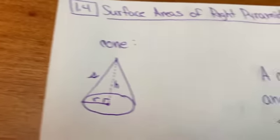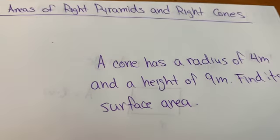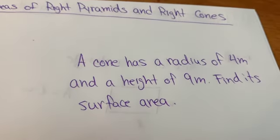So the question for this one says, a cone has a radius of 4 meters and a height of 9 meters, find its surface area.